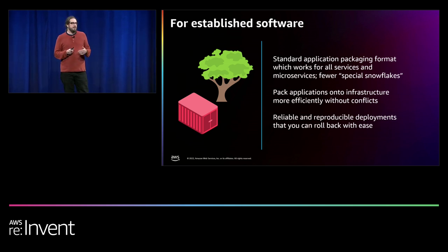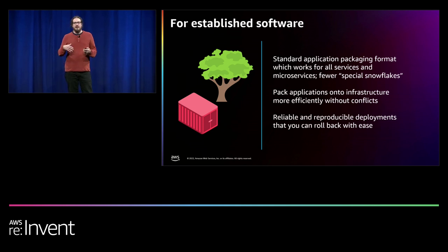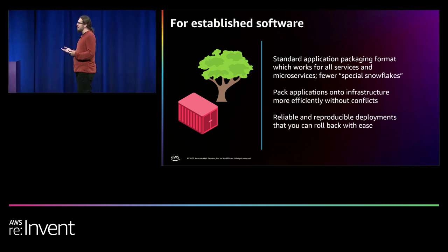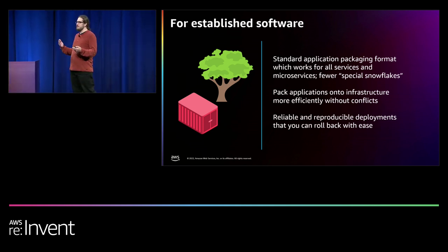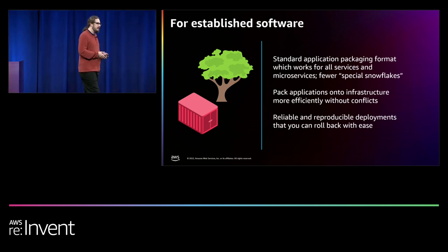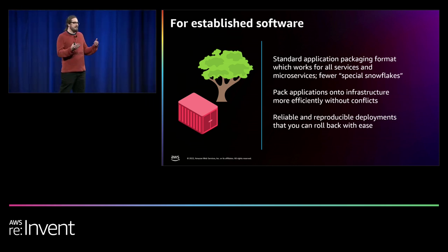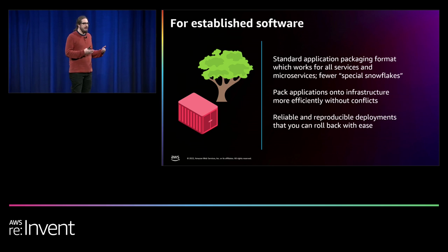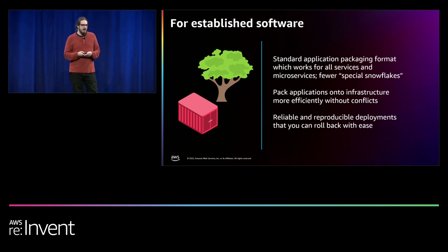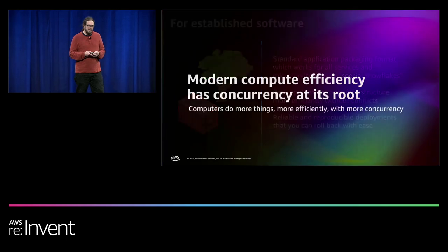There are also reliable deployments and rollbacks. A container image, once it's deployed, is immutable. Even if something terrible happens in that environment where my application crashes and completely destroys the local file system, I can always bring that container image back onto that machine, reboot it from scratch, and restore it based on the pattern it's supposed to be running in.